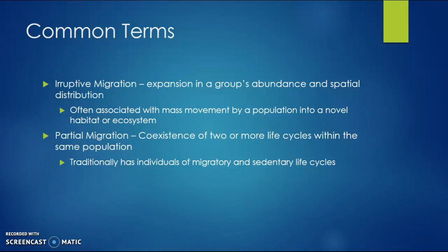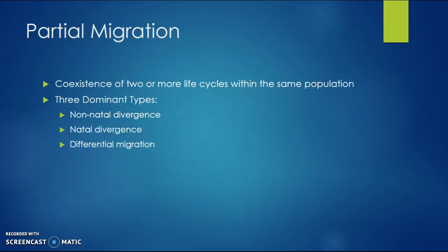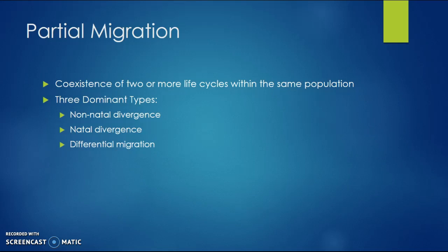Partial migration is the coexistence of two or more life cycles within the same population. Traditionally, individuals have migratory and sedentary life cycles. The three dominant types of partial migration are nonnatal divergent, natal divergent, and differential migration. Our talk today is going to focus on differential migration.